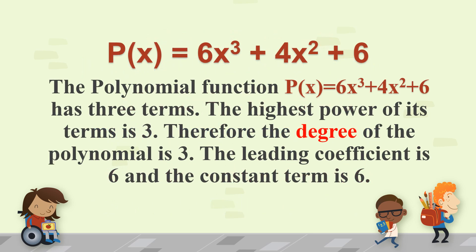P(x) = 6x³ + 4x² + 6. The polynomial function has three terms: 6x³, 4x², and 6. It has terms. It's separated by plus or minus signs.